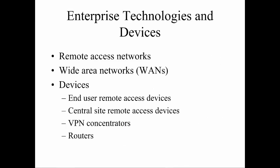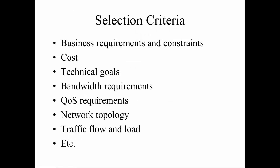We're looking at things like remote access for end users and client locations or client sites, maybe even VPN concentrators depending on our setup, the different types of WAN technologies, and the different types of routers and switches. Some of the selection criteria could be technical goals, budget, business requirements, constraints, bandwidth issues, quality of service requirements, current layout of the network, how drastically we have to change it, traffic flow, and traffic load.